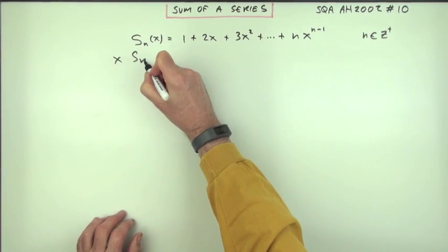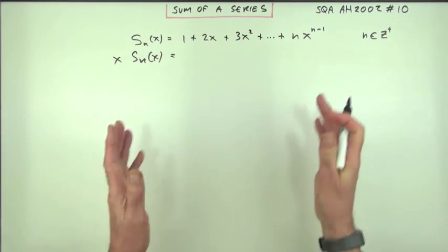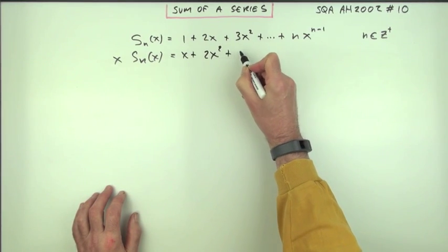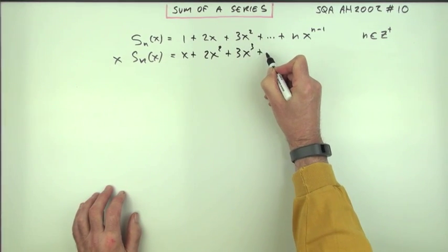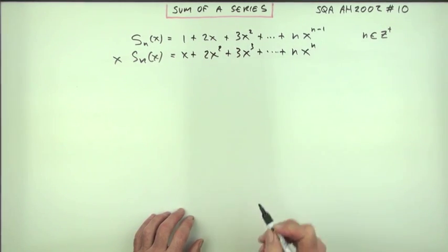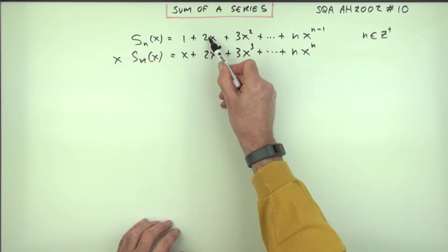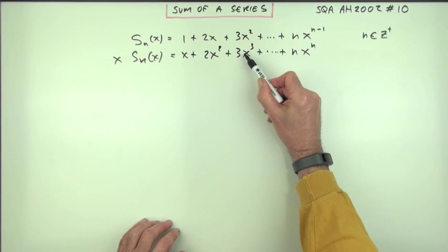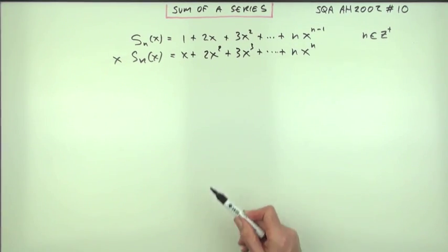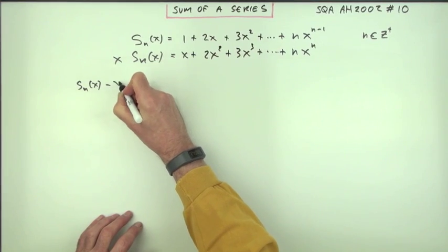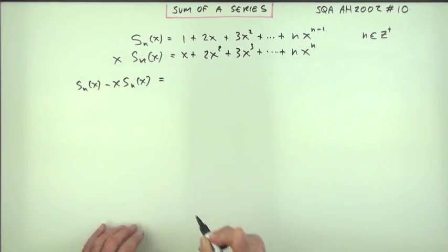If you were to do x times it, it's a standard technique multiply by x so you can realign the terms to get something to happen, would give you x plus 2x squared plus 3x cubed plus and then for this one it would be n times x to the n. Now looking at the like terms 2x and an x, 3x squared and a 2x, that would be 4x cubed and a 3x cubed, there's no partner for this one. You'll see that if you were to subtract them they'd all go down to one and that's what you do, top takeaway bottom, if you do the sum to n terms minus x times the sum to n terms.